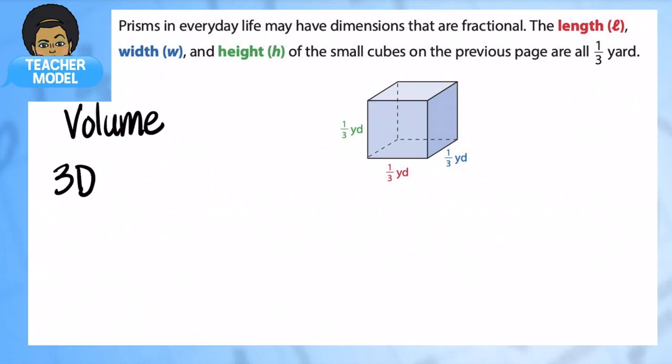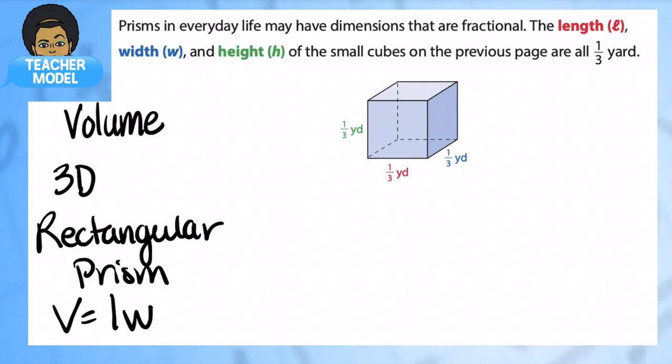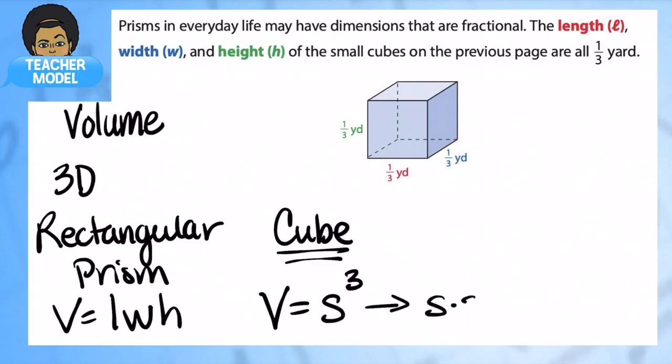For rectangular prisms we're going to use the formula volume equals length times width times height. For cubes, where every single side is the same just like our picture over here, we can use volume is equal to side cubed. Why? Because it's the same thing as saying side times side times side - you're still multiplying all three numbers. So it doesn't really matter if you want to say length times width times height for a cube. That is fine, but you could also just express it as side cubed.